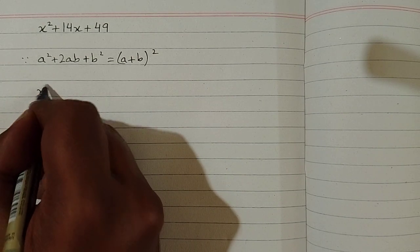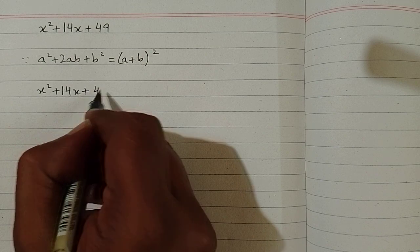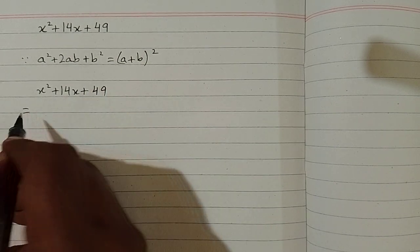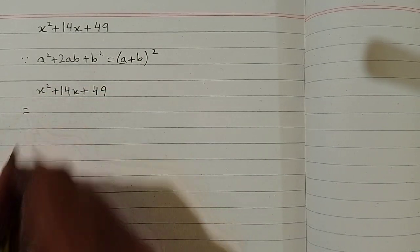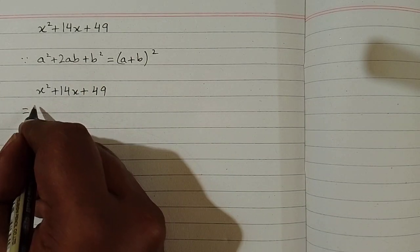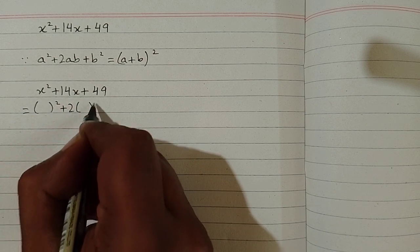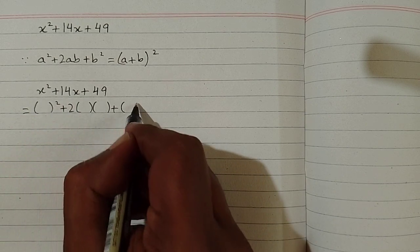So we have x² + 14x + 49. First we will write the structure of the formula. We can put brackets in place of a and b in this structure. So first we will write a² + 2ab + b².